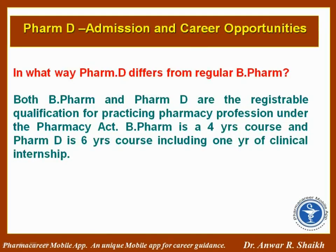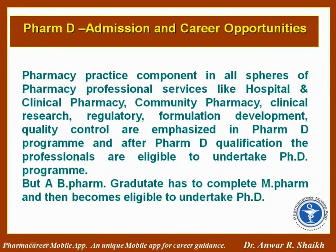In what way does PharmD differ from regular B-Pharm? Both B-Pharm and PharmD are registrable qualifications for a practicing pharmacy profession under the Pharmacy Act. B-Pharm is a 4-year course and PharmD is a 6-year course including 1 year of clinical internship. Pharmacy practice components in all spheres of pharmacy professional services — including hospital and clinical pharmacy, community pharmacy, clinical research, and regulatory — are emphasized in the PharmD program.